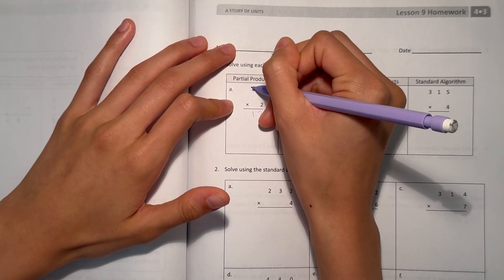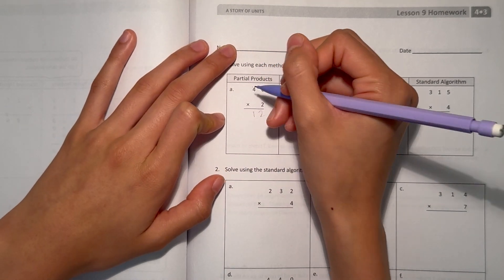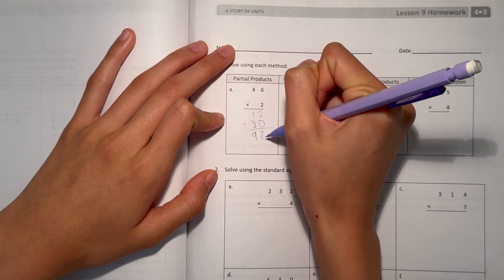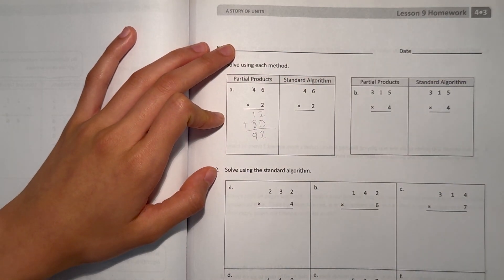Well 2 times 4 is 8, but then times 40, that's 80. So then we just add 12 and 80, so our answer is 92. 46 times 2 is 92.